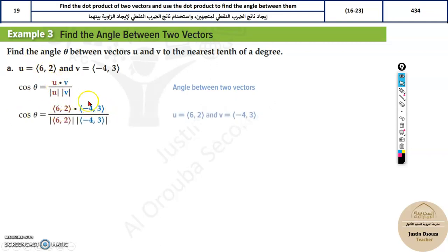You need to find the dot product. I hope you remember the dot product. Dot product is very simple. The x component multiplies with the x component plus this multiplied with this, the y with the y component.